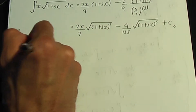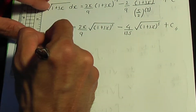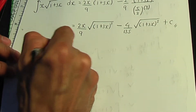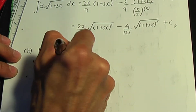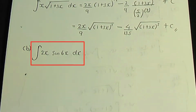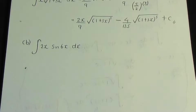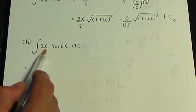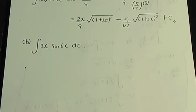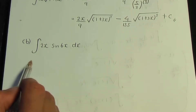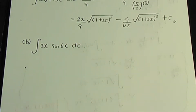Let's try part b: integrate 2x times sin 6x. I can't apply substitution here, so I rely on by parts. I have an x term — 2x — so I'm going to take u to be 2x and dv/dx to be the remaining term, which is sin 6x.